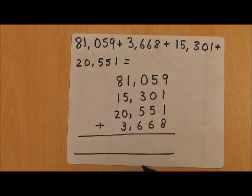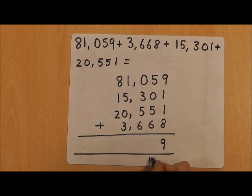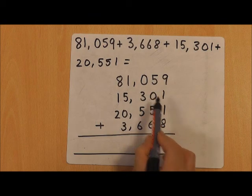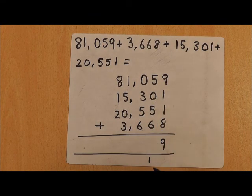I've put 19 like that, this one has been carried over to add to the next column. 5 add 0 is 5, 5 add 5 is 10, add 6 is 16, add 1 is 17, so again I've carried that 1 over and put the 7 there.